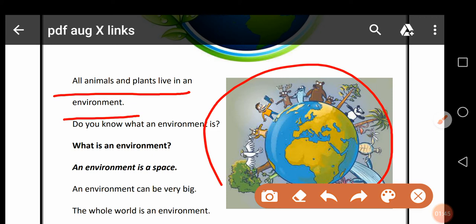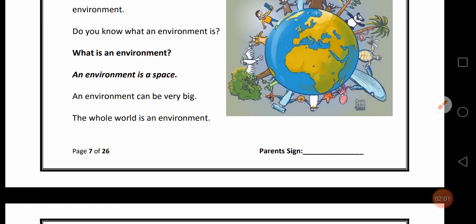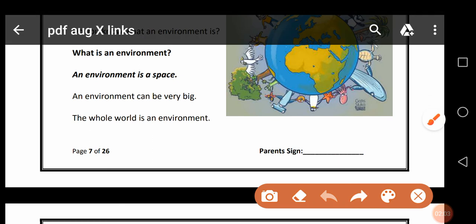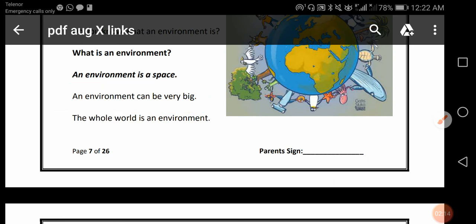Do you know what an environment is? Kya apko pata hai ke environment kya hota hai? An environment is a space. Environment kisi bhi jaga ko kaha sakti hai. An environment can be very big. Environment bhoat bada bhi ho sakti hai. The whole world is an environment.